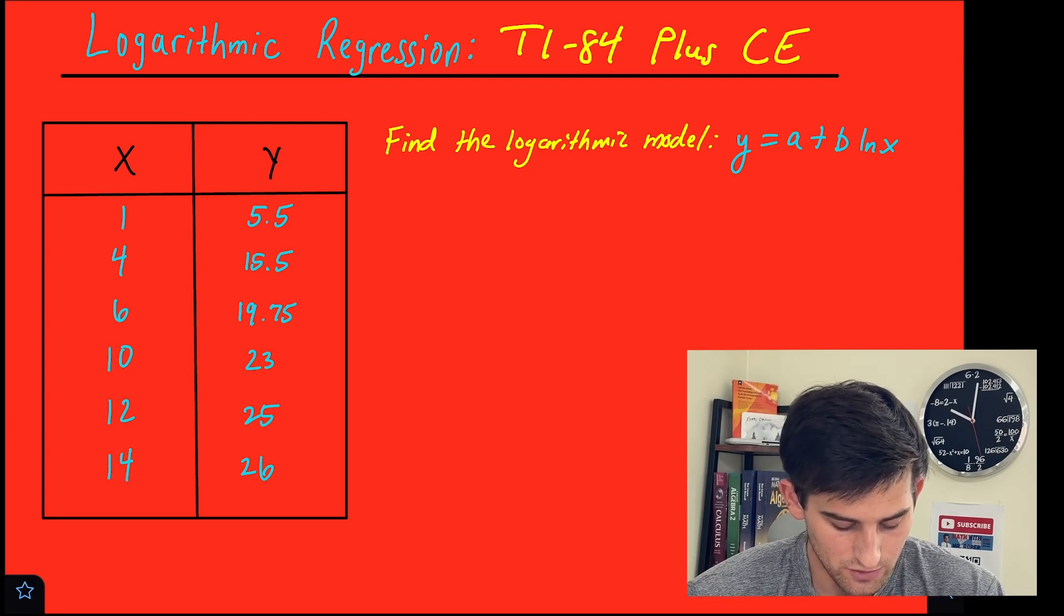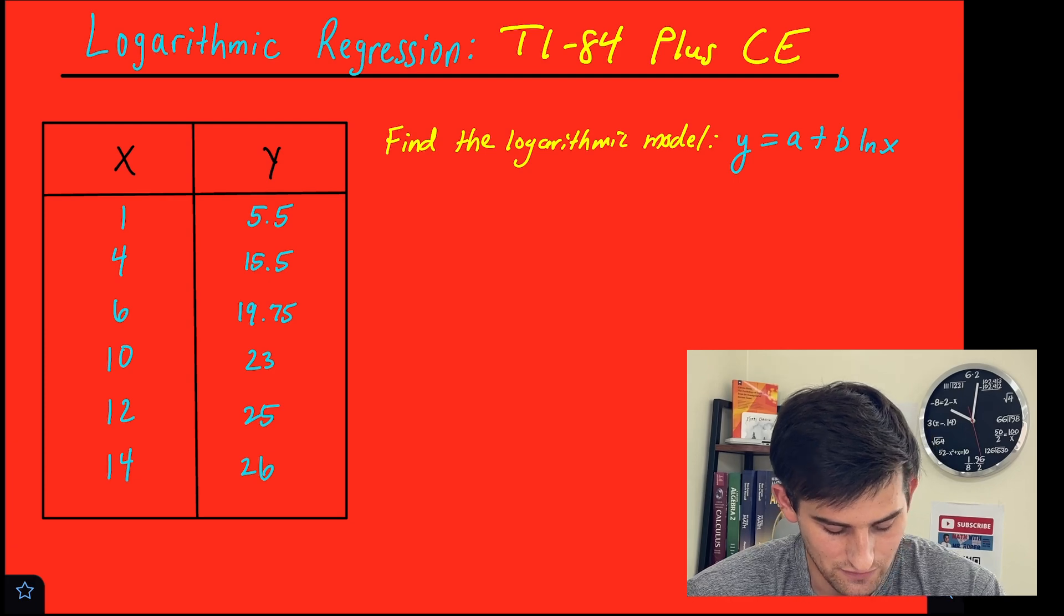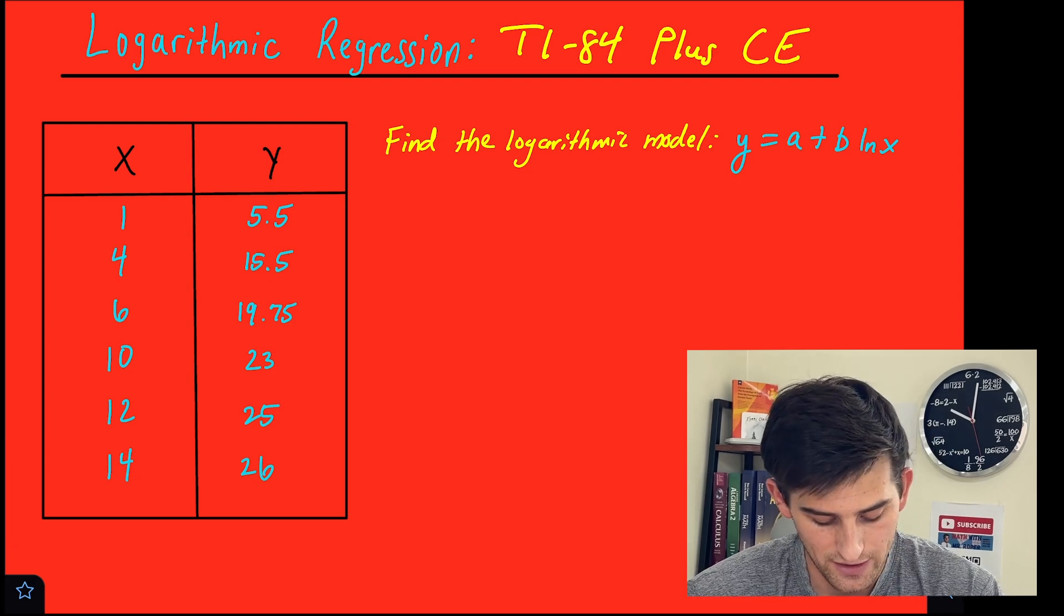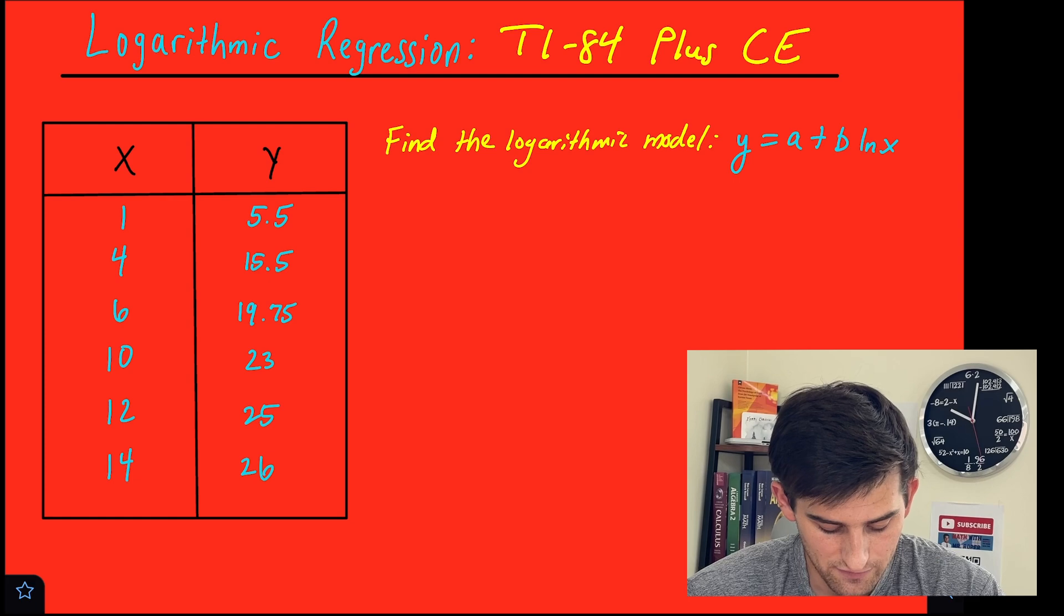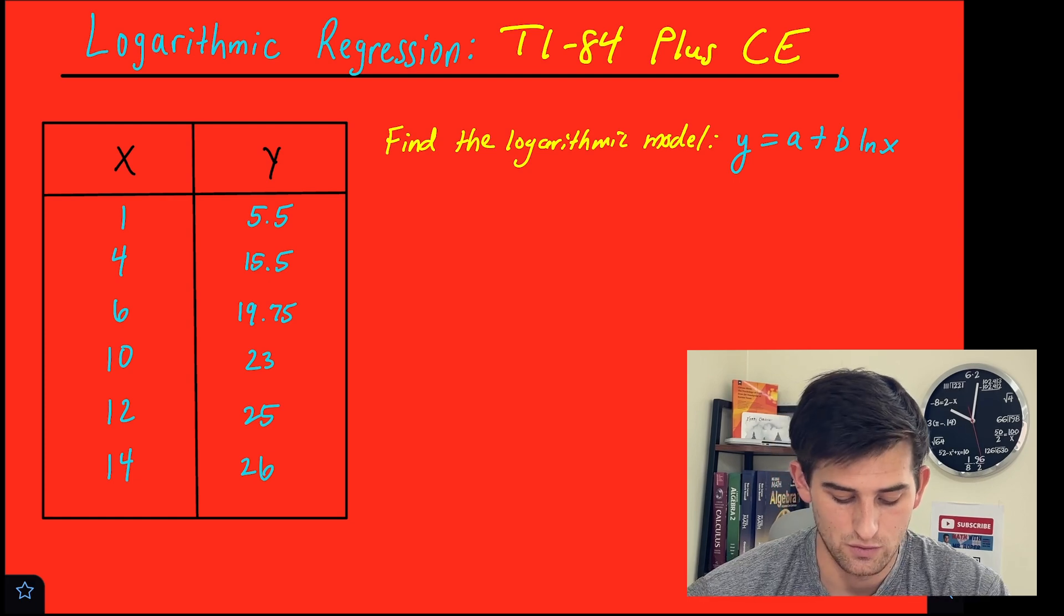Okay, so we look at our table. We have 1, 4, 6, 10, 12, and 14 as our x values, and our y values are 5.5, 15.5, 19.75, 23, 25, and 26.